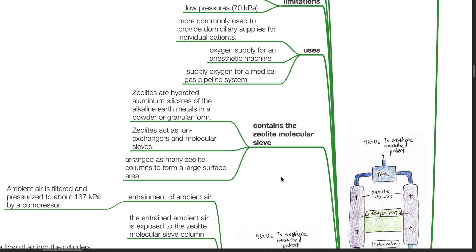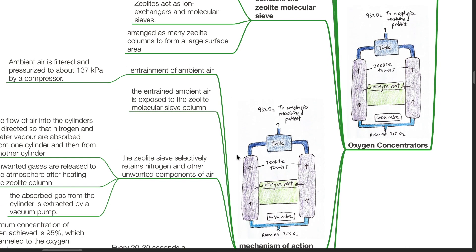These contain the zeolite molecular sieve. Zeolites are hydrated aluminum silicates of the alkaline earth metals in a powder or granular form. Zeolites act as an ion exchanger and molecular sieve. Arranged as many zeolite columns to form a large surface area.